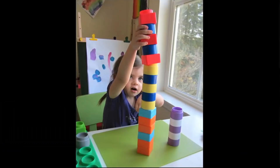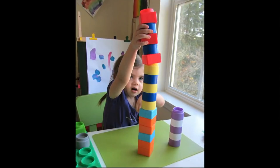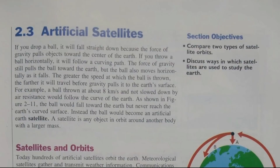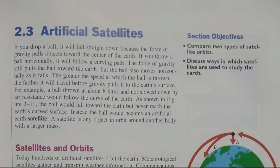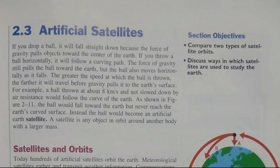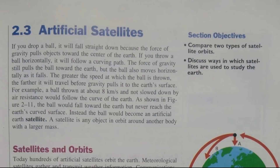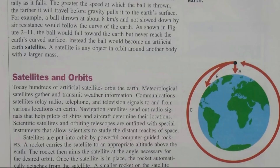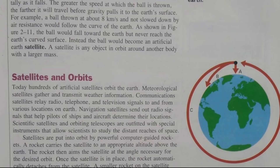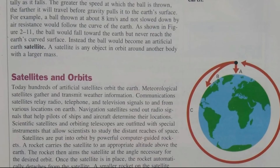Okay, I'm game. Let's see what pitfalls you can make, and the boys and girls will look and watch too. If you drop a ball, it will fall straight down because the force of gravity pulls objects toward the center of the earth. If you throw a ball horizontally, it will follow a curving path. A ball thrown at about 8 kilometers a second and not slowed down by air resistance would follow the curve of the earth. As shown in figure 2-11, the ball would fall toward the earth but never reach the earth's curved surface. Instead, the ball would become an artificial earth satellite. A satellite is any object in orbit around another body with a larger mass.